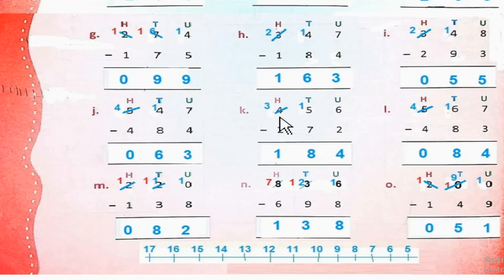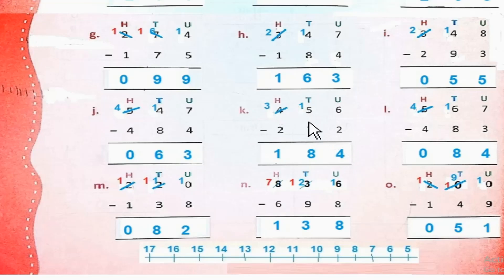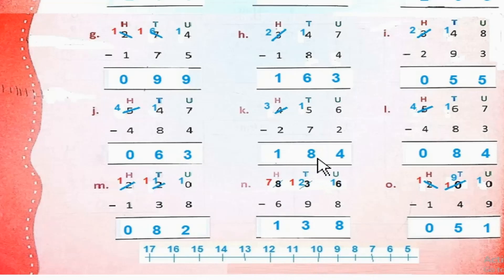Part K: 456 minus 272. 6 minus 2 = 4. 5 से 7 minus नहीं होता। So हम 4 से 1 borrow करेंगे — यह 3 रह जाएगा, और यह 15 tens हो जाएगे। 15 minus 7 = 8. 3 minus 2 = 1. So the answer is 184.